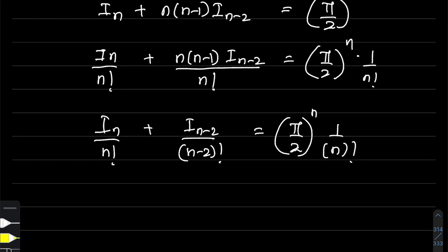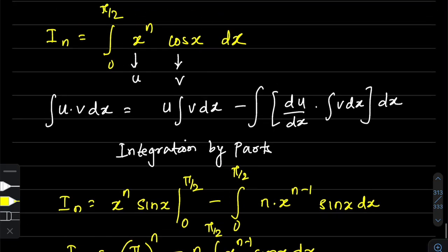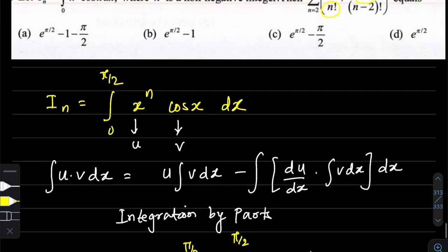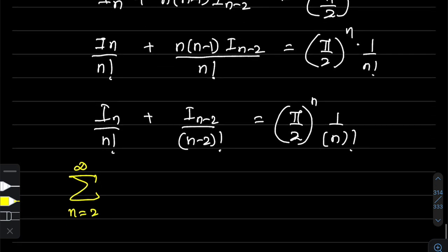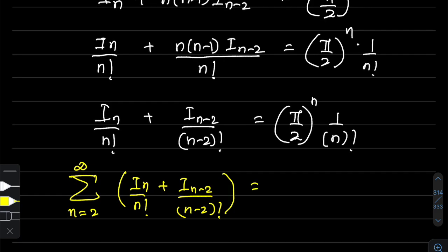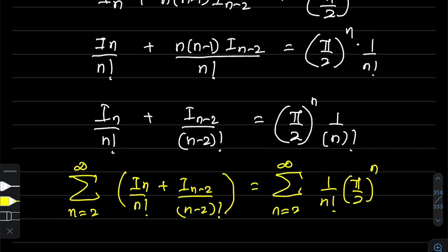Now we sum this expression from n=2 to infinity. The summation of I_n/n! + I_(n-2)/(n-2)! from n=2 to infinity equals the summation of (1/n!)·(π/2)^n from n=2 to infinity.